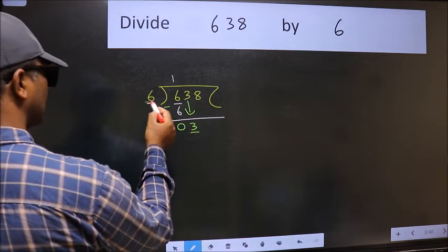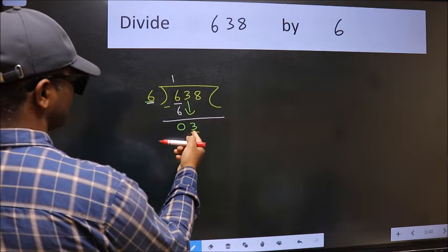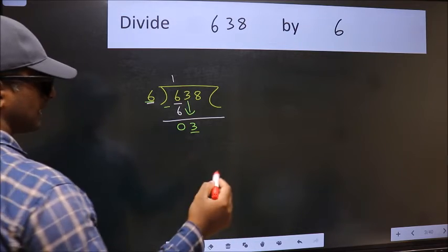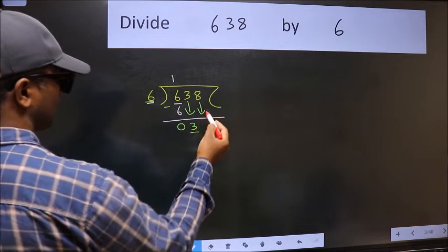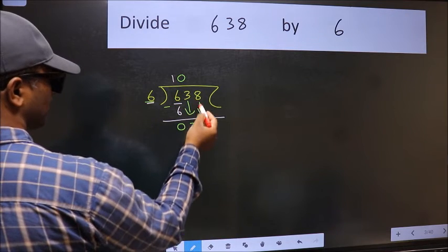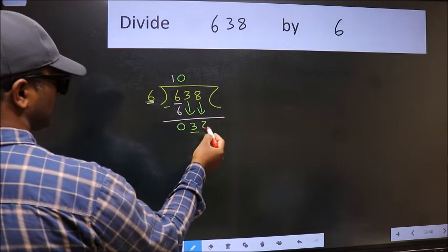Now here we have 3 and here 6. 3 is smaller than 6, so we should bring down the second number. And the rule to bring down the second number is we should put 0 here. Then only we can bring this number down.